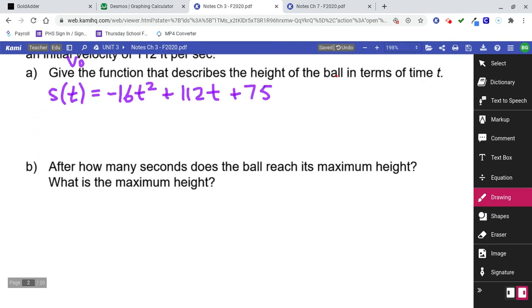Part B says, after how many seconds does the ball reach its maximum height? What is the maximum height? So we're thinking about a parabola or something. But when they talk about maximum height, they're talking about the vertex. We know because we've seen these problems before that they're definitely talking about the vertex. So we can find the vertex. We can graph this thing. Let's go to Desmos and actually just graph it.